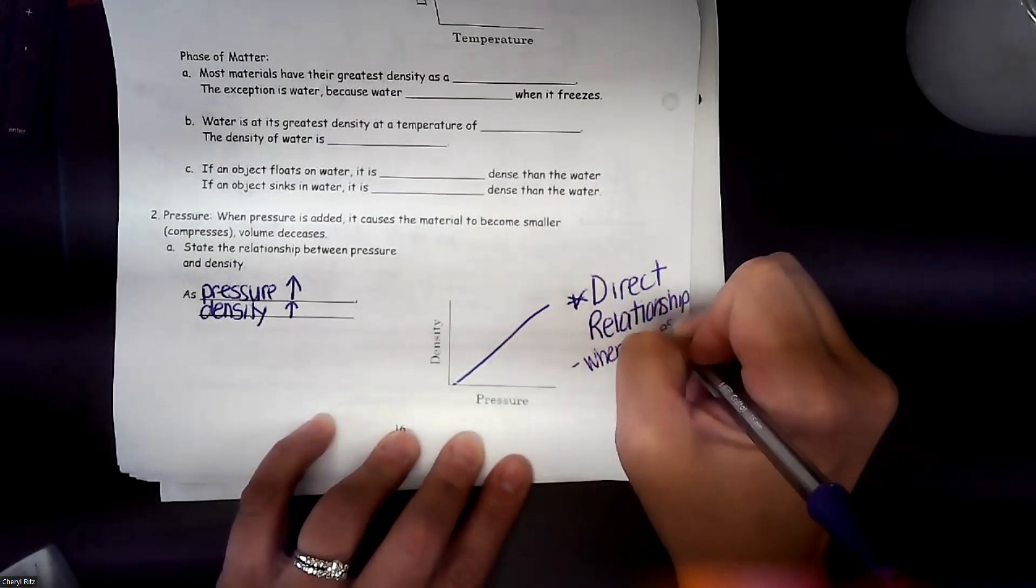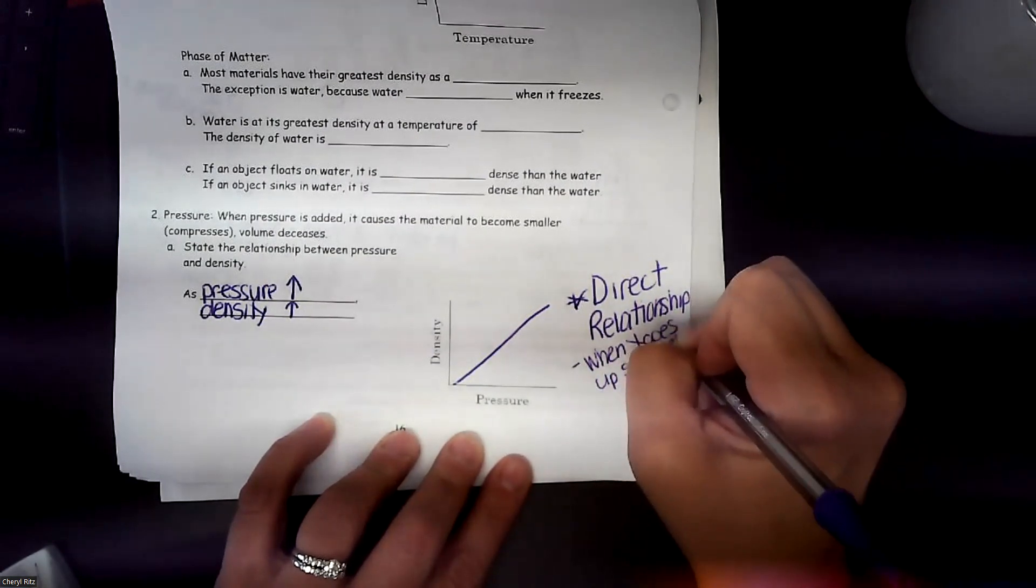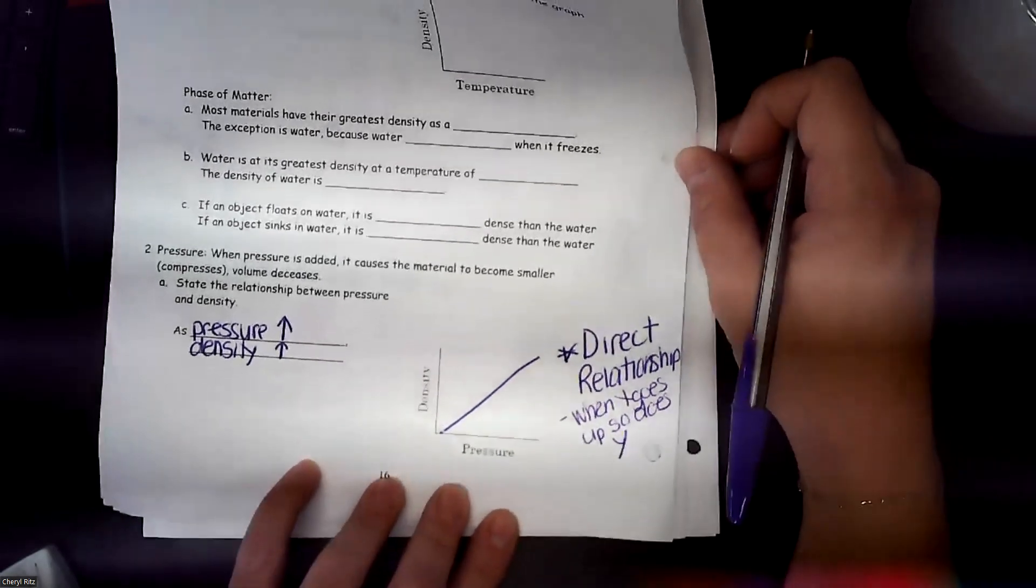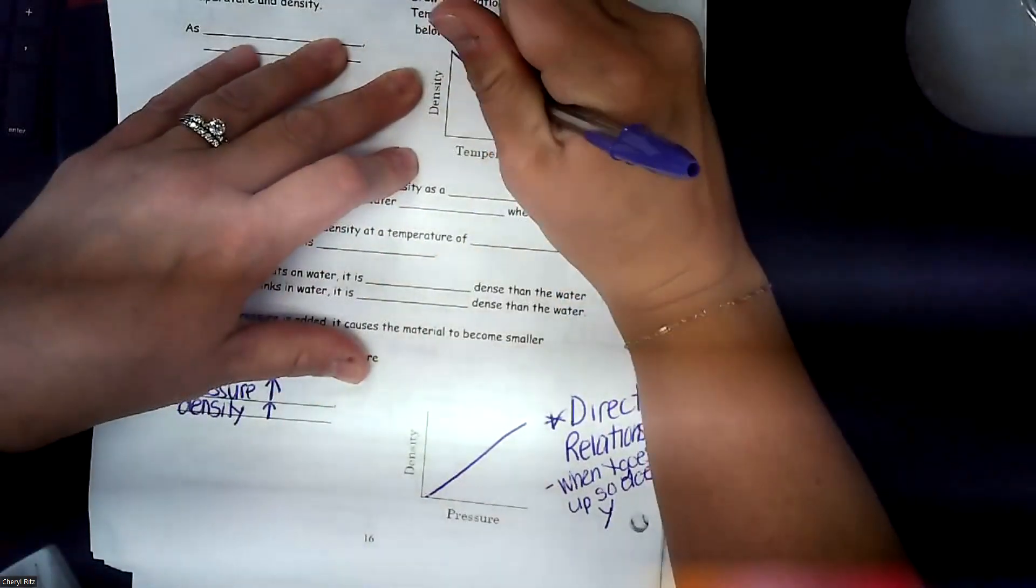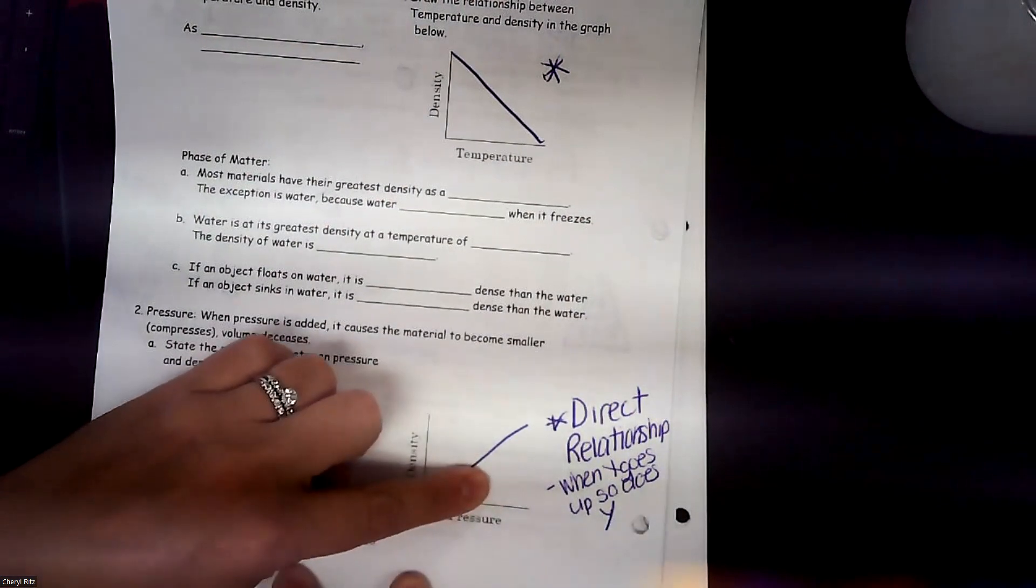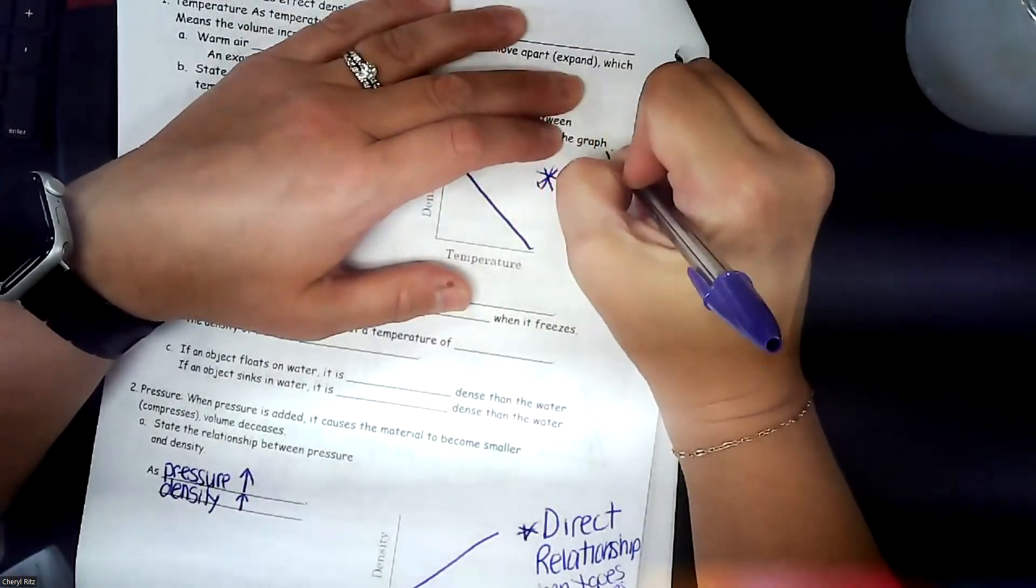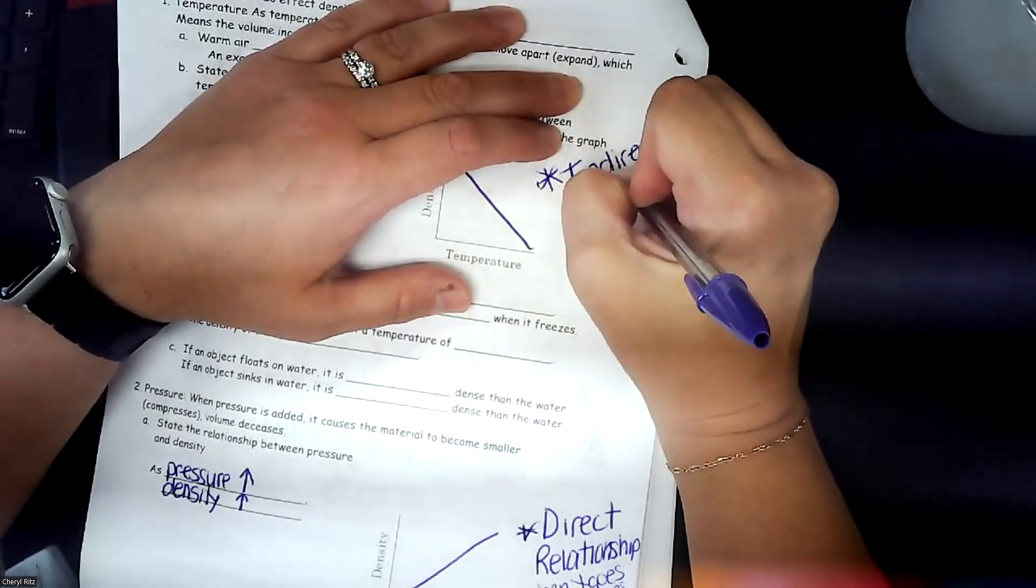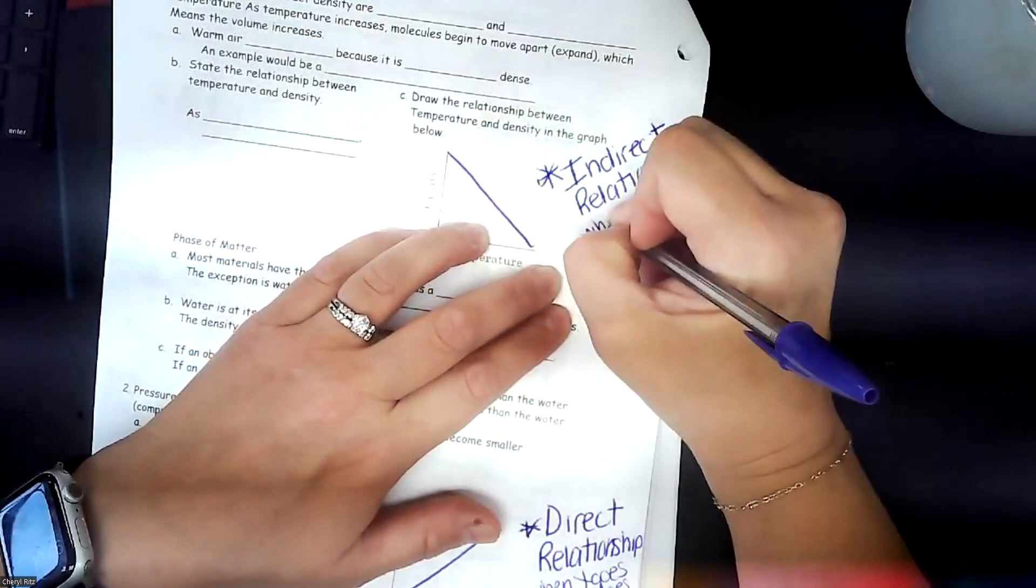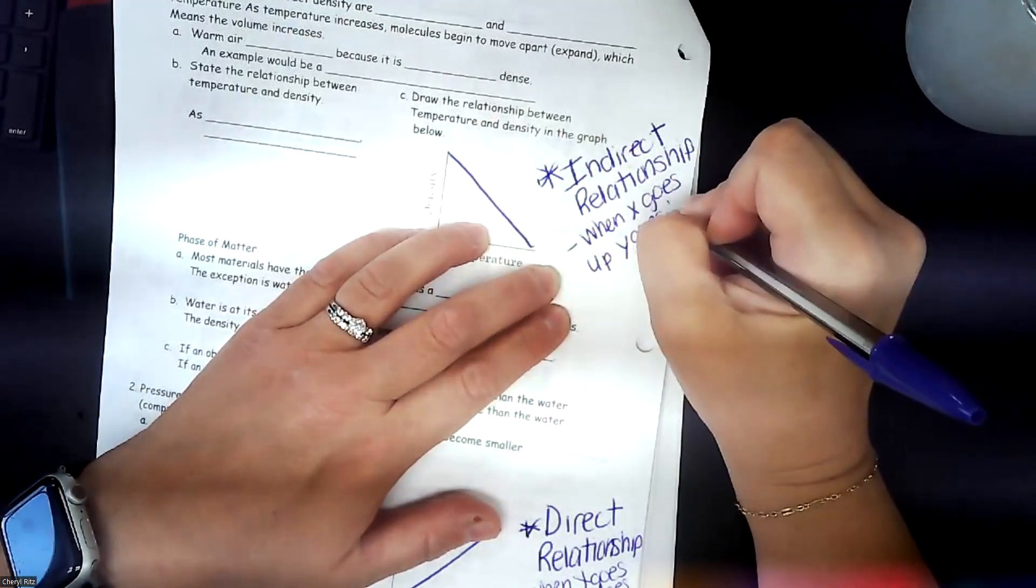And just a quick little note: when one goes up, or when x goes up, so does y. Versus the one we did for temperature last week - when temperature went up, density went down. If this is a direct relationship, what do you think this one's called? That is an indirect relationship. And again, that's when x goes up, y goes down.